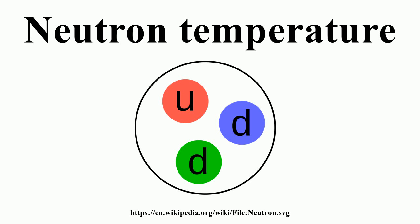A fast neutron is a free neutron with a kinetic energy level close to 1 MeV, hence a speed of 14,000 km per second or higher. They are named fast neutrons to distinguish them from lower energy thermal neutrons and high energy neutrons produced in cosmic showers or accelerators. Fast neutrons are produced by nuclear processes.